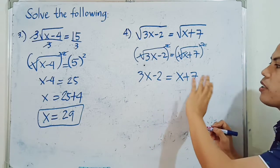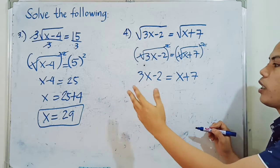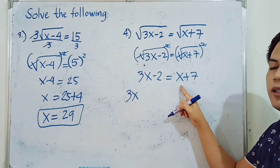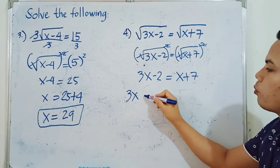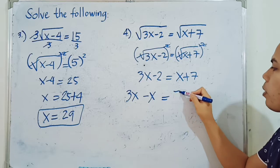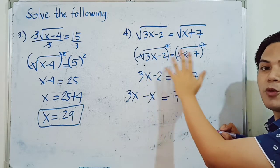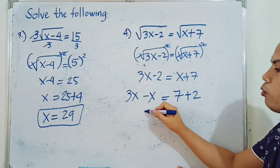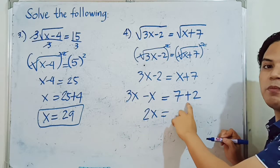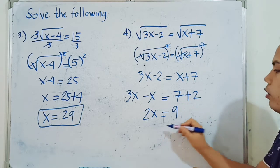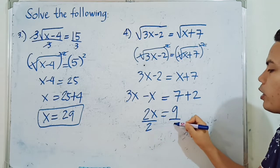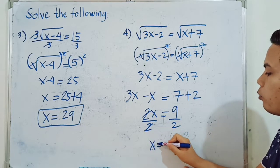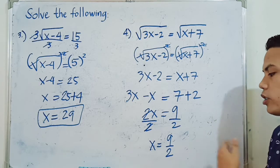We combine like terms: all terms with variable X go to the left side, and all constants go to the right side. So 3X minus X gives 2X on the left. Transposing negative 2 to the right side gives positive 2, and 7 plus 2 equals 9 on the right. We then divide both sides by 2, and our final answer is X is equal to 9 halves, or 4.5.